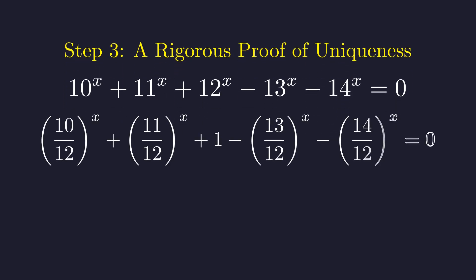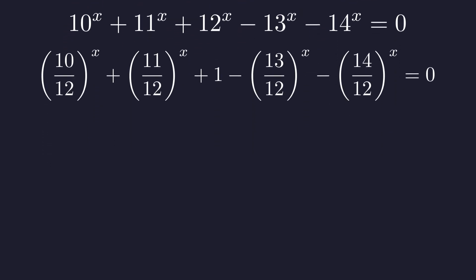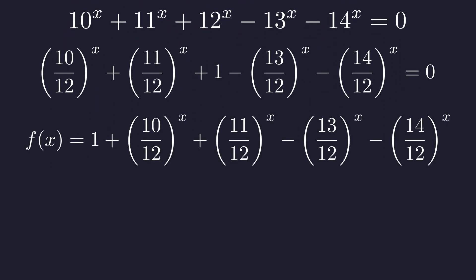Since 12 to the x is always positive, this division doesn't change our solutions. But look what happens. All our bases are now clustered around one, which makes the behavior much clearer. Let's call this entire expression f of x. Finding solutions to our original equation is equivalent to finding where this function equals zero.